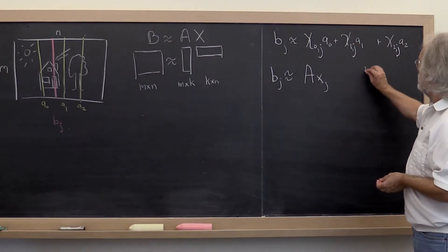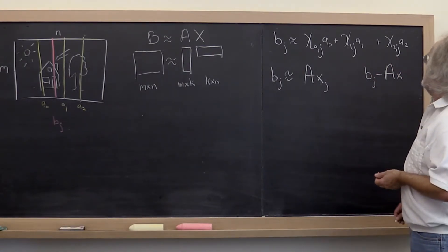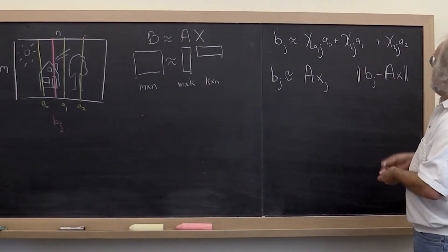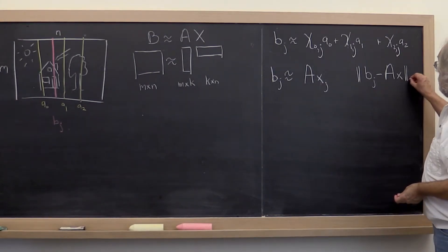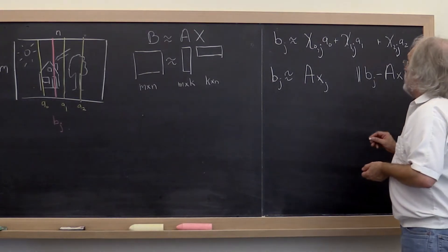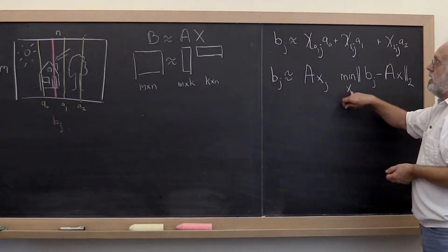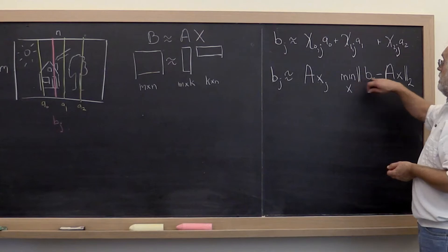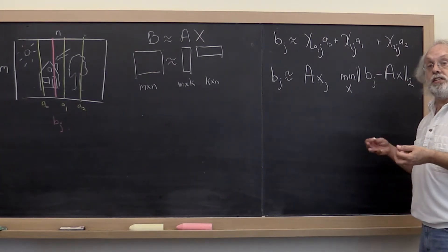What does that mean? Well that means that we want to look at Bj minus A times x. We want to say, let's look at the magnitude of the difference. Well we can use the 2-norm for the magnitude. And then we can say minimize that over all possible choices of x and pick your xj to be the vector x that minimizes all of that. That's known as the linear least squares problem.